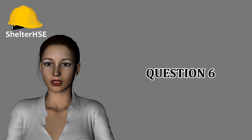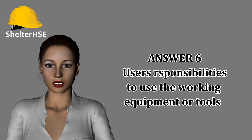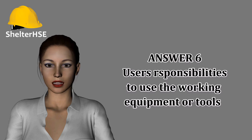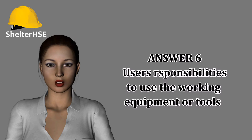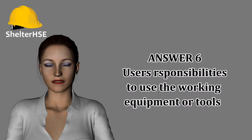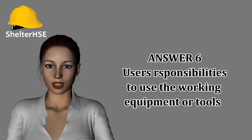Identify factors to be considered by users before using working equipment. Users of work equipment should: only operate equipment they are authorized to use, follow instruction and training, only use equipment for its intended purpose, carry out safety checks before use, not use equipment if it is unsafe, report defects immediately, not use equipment under the influence of drugs or alcohol, and keep equipment clean and in safe order.